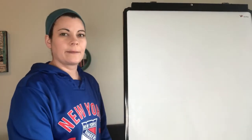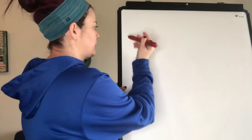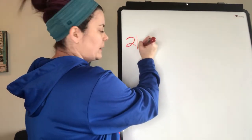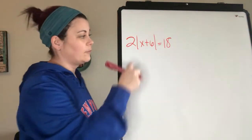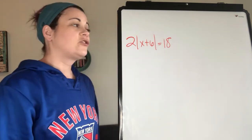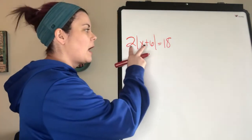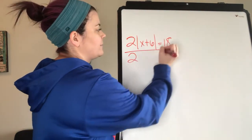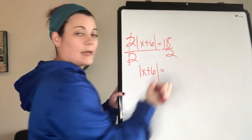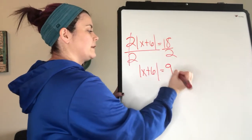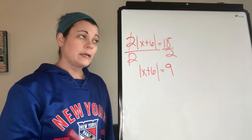We're going to do another example: 2|x + 6| = 18. In this case, the absolute value is not isolated — there's a 2 on the left side with it. So we need to isolate it. Just like solving an equation, we do the opposite operation. Since this is multiplication, we divide both sides by 2. Then we get |x + 6| = 9. Now we've isolated the absolute value.